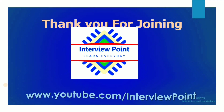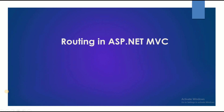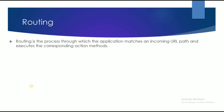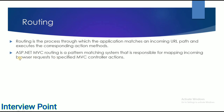Hello friends, this is Diger Vatam and thank you for joining Interview Point. In this video I am going to talk about routing in ASP.NET MVC — how it works and what it is. Routing is a pattern matching system. It is the process through which the application matches an incoming URL path and executes the corresponding action methods. In simple terms, ASP.NET MVC routing is a pattern matching system responsible for mapping incoming browser requests to specified MVC controller actions.